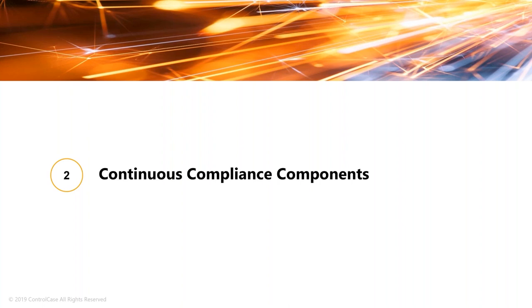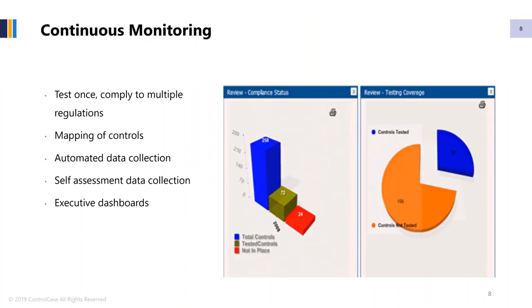That was a high level on Control Case. Now let's get into some of the continuous compliance components, which is going to form the meat of our presentation. When we talk about continuous compliance, a big part of that is to have dashboards and be able to monitor where you are in the compliance cycle as you go month after month, week after week, year after year within your enterprise, and that's really accomplished through the use of dashboards that are very necessary in order to monitor where your compliance status is.